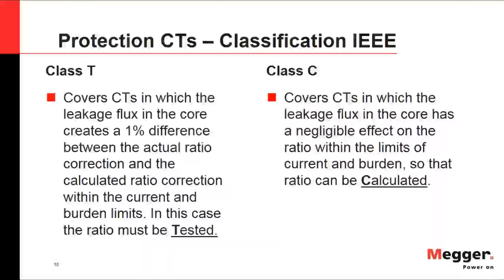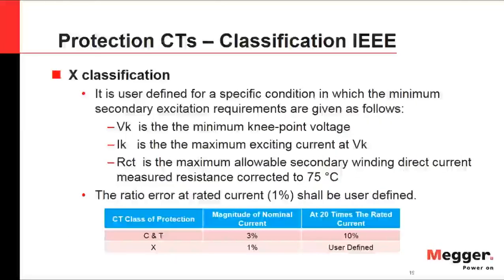There is also classification X, which involves agreement between manufacturer and end user. It requires defining the minimum knee-point voltage, maximum exciting current at the knee-point voltage, and the secondary winding resistance measured and corrected to 75°C. Standard burdens for protection CTs according to IEEE are 1 ohm, 2 ohms, 4 ohms, and 8 ohms.